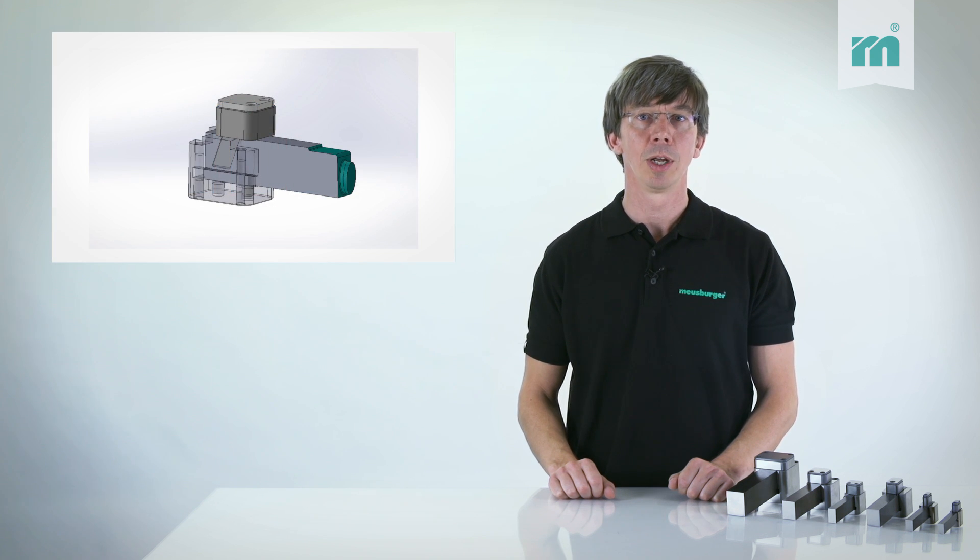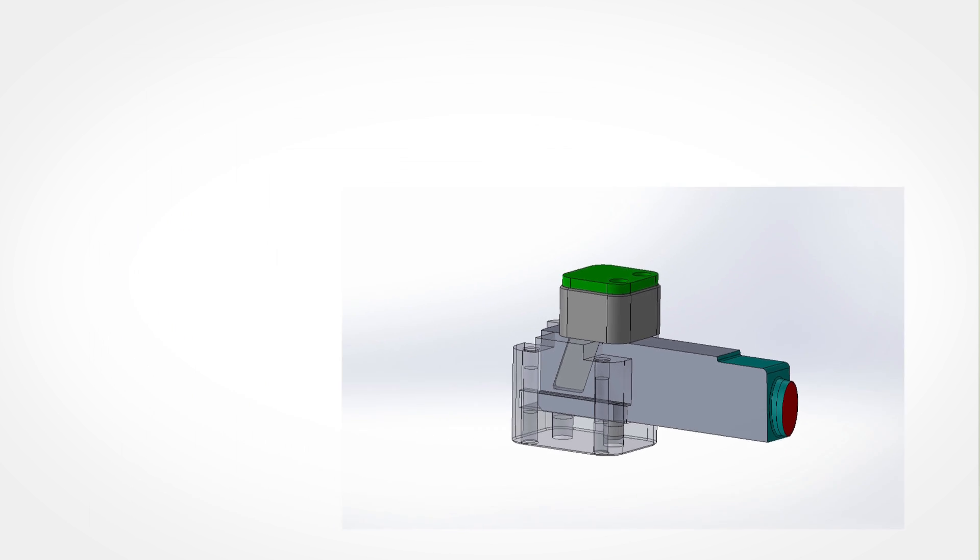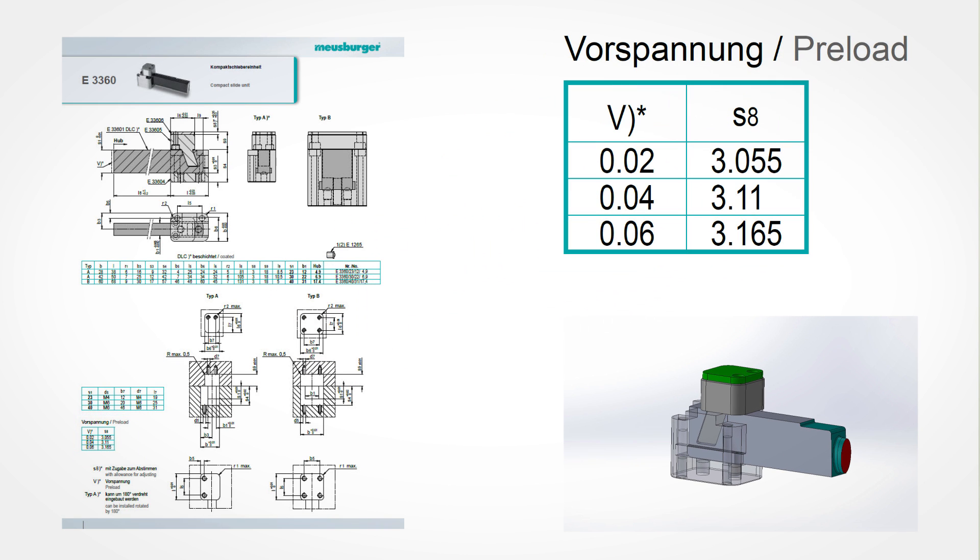During the assembly, the preload on the slide can be adjusted. This is necessary if a sealed surface on the front end is required. The preload prevents the sealing surface from being lifted when the slide is loaded by injection pressure. This can be determined with the help of a table on the catalog page of the compact slide units.